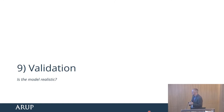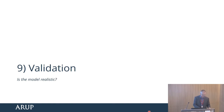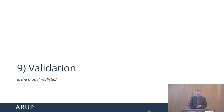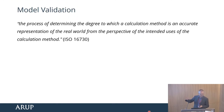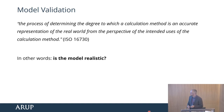Starting to wrap things up — validation. Checking comes under two categories: validation and verification. Validation — the first one — is: is the model realistic? There is a nice official definition, but the question is does the model represent reality? Are there those horizontal reactions, are the offsets there or not, are you using appropriate materials, and so on? And there's also software validation — is the software appropriate for the analysis you're doing?